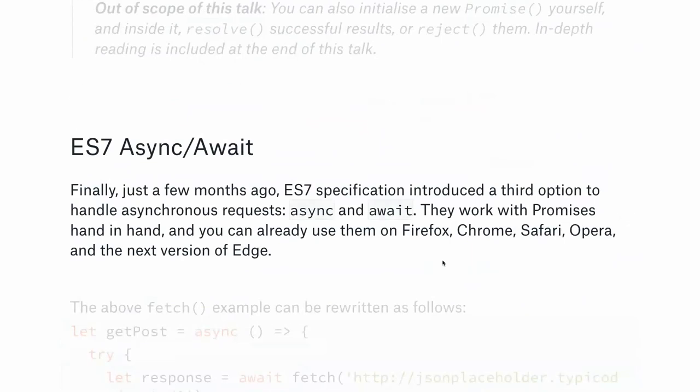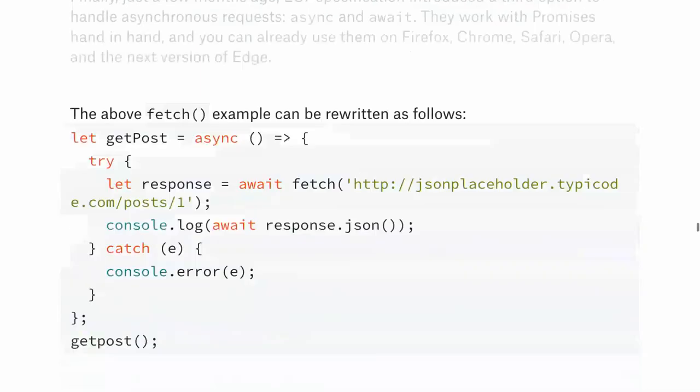ES7 introduced a new pair of keywords: async and await, available now on all browsers except Edge version 15, which isn't out yet. There are also polyfills available. You can rewrite that fetch example using an async function — just write 'async' before the function statement — and then use the 'await' keyword before each promise.